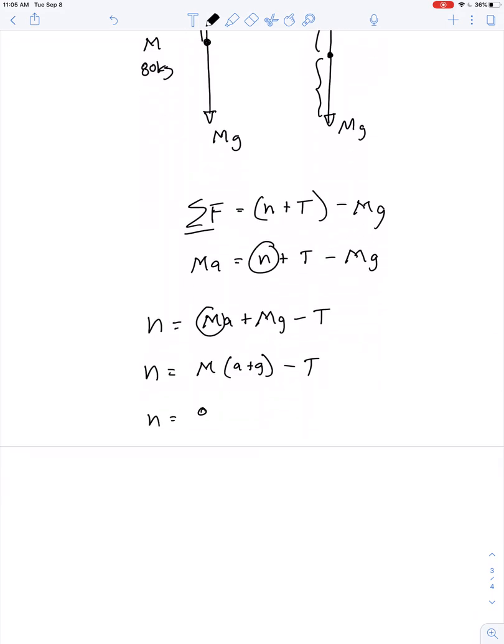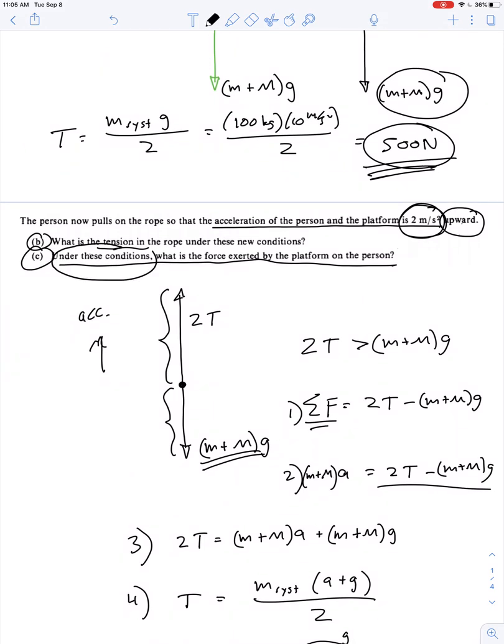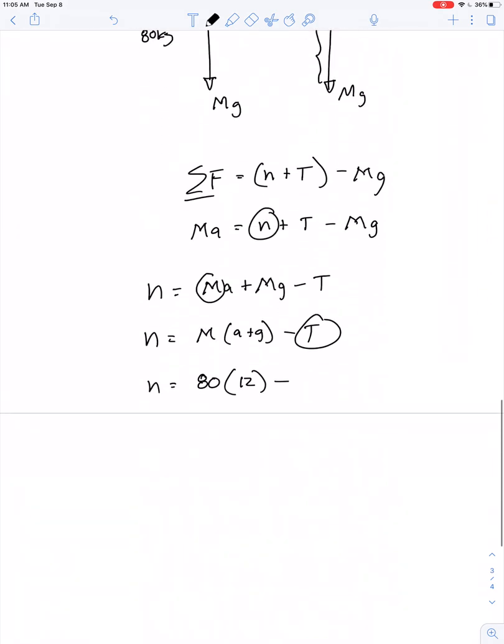So it's equal to 80 times 12 minus - we already found the value of T. Under this condition, the person accelerates upward at 2 meters per second squared, and that tension is 600 newtons. So the contact force is 80 times 12 minus 600. In other words, it's 960 newtons minus 600 newtons, giving us a value of 360 newtons.